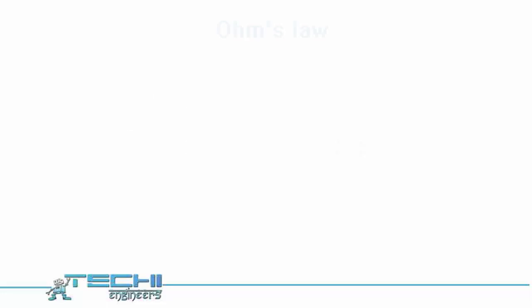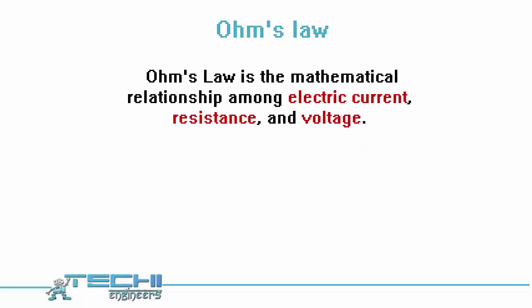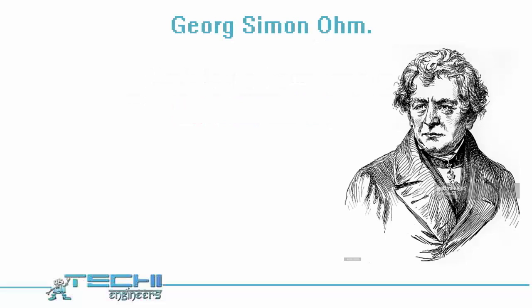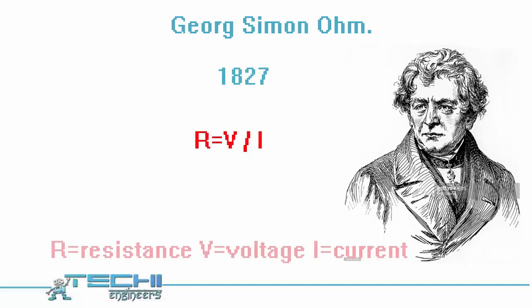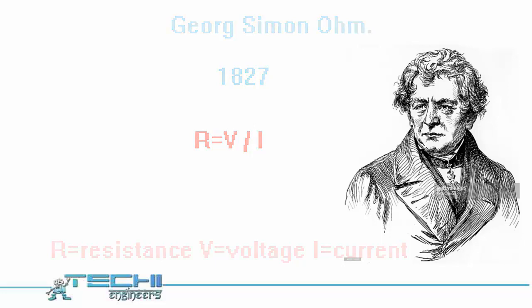Now we are moving toward Ohm's Law. Ohm's Law is the mathematical relationship among electric current, resistance, and voltage. The principle is named after the German scientist Georg Simon Ohm, who discovered in 1827 that electrical resistance is equal to voltage divided by current. In the formula, I is for current, V stands for voltage, and R is for resistance.